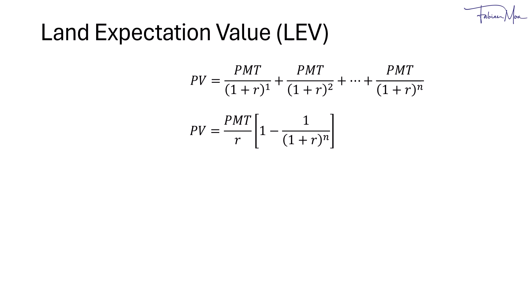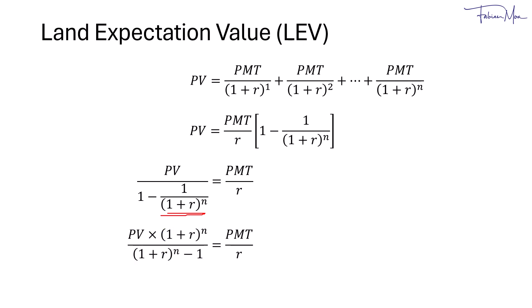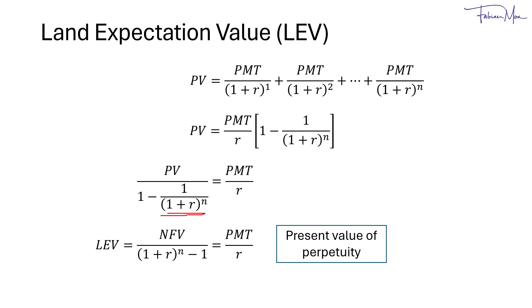Next, we divide both sides by 1 minus 1 over (1 plus R) to the power of N. So on the right-hand side, we have PMT over R, which is the PV of a perpetuity. To remove the fraction in the denominator, we multiply the numerator and denominator by (1 plus R) to the power of N. That simplifies to PV times (1 plus R) to the power of N, divided by (1 plus R) to the power of N minus 1. Finally, recognizing that net future value, or NFV, equals PV times (1 plus R) to the power of N, we arrive at the LEV formula. Note that PMT divided by R is the present value of a perpetuity.